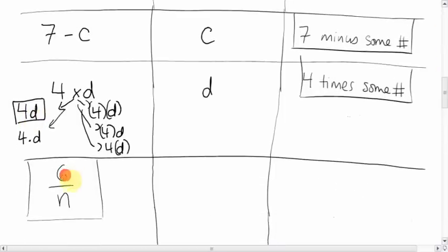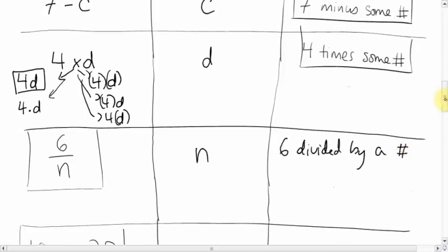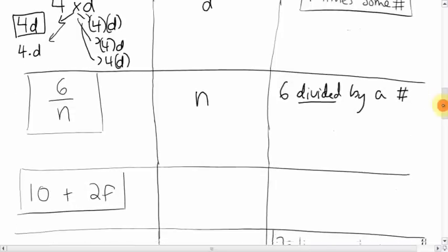For '6 with a line and N' — our variable is N. This means '6 divided by some number.' Another fancy way of saying divided by is: the quotient of 6 and a number.